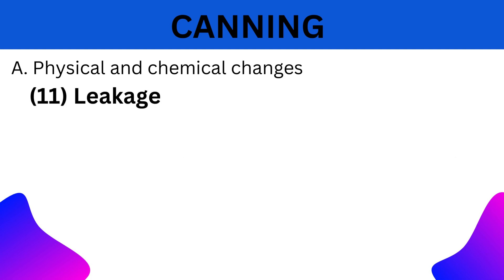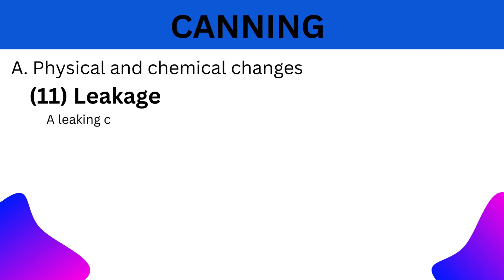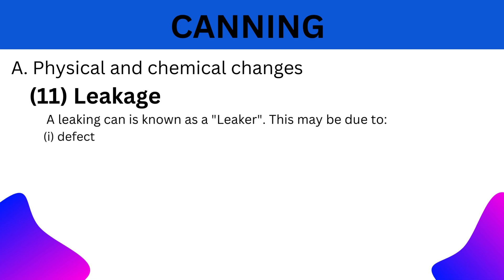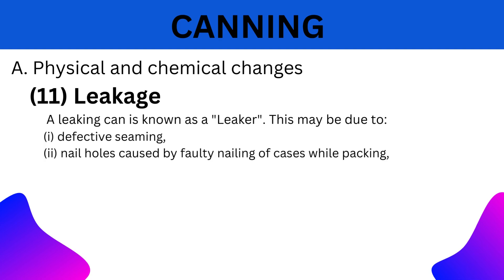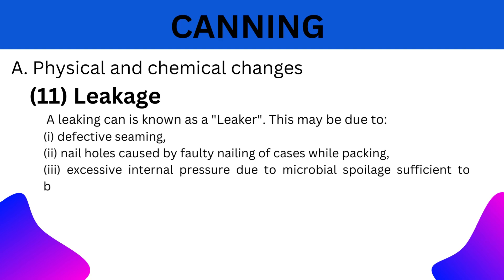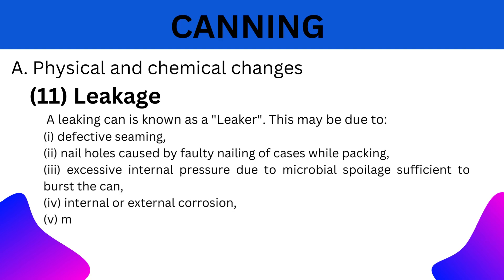11. Leakage: A leaking can is known as a leaker. This may be due to defective seaming, nail holes caused by faulty nails of cases while packing, excessive internal pressure due to microbial spoilage sufficient to burst a can, internal or external corrosion, or mechanical damage during handling.